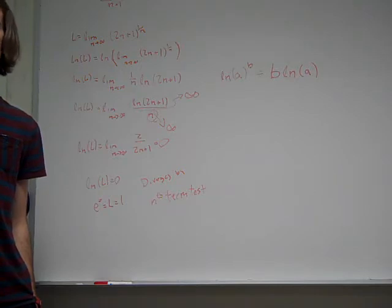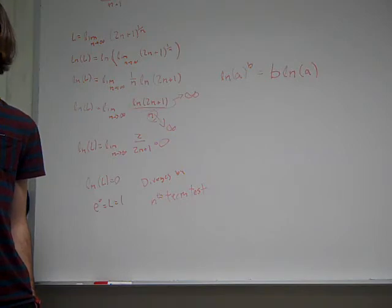Because I mean, just think of the simplest one would be x to the x. Well, it's 1 to the 1. And if you put 2 it's 2 squared, you put 3 it's 3 cubed, 5 and it's 5 to the 5th, it's growing super fast, right?